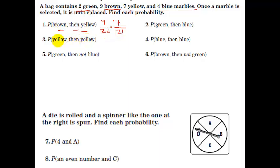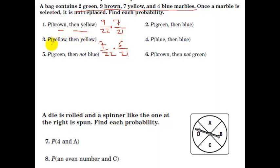For yellow then yellow, we start with seven out of twenty-two. Then the probability of getting a second yellow: now there are only six left out of twenty-one total marbles. So you find the probability of the first one, then the probability of the second one based on the first one having happened.